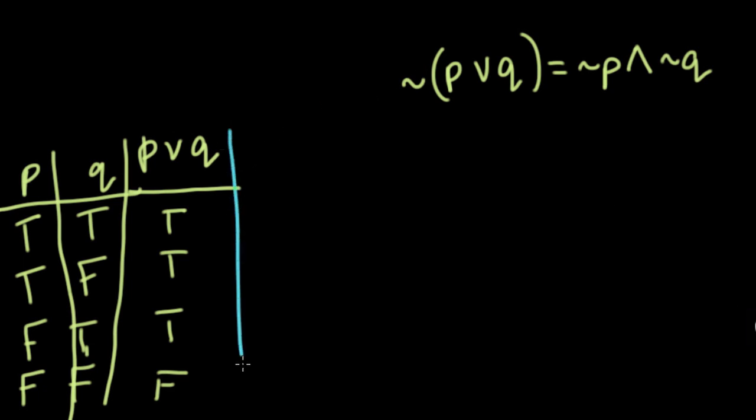Now we're negating that statement, right? We're saying not P or Q. So that would mean if we follow, of course, the order of operations, we solve parentheses first and then negate that. So that means we'll get the opposite results. We'll get false, false, false, and true.